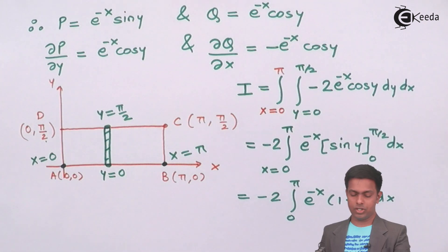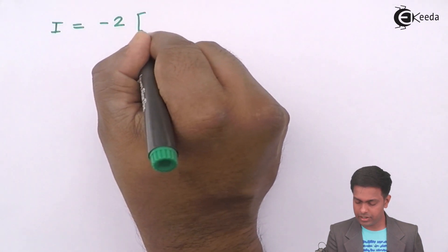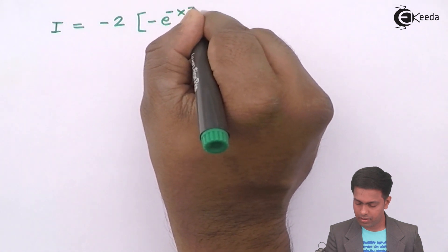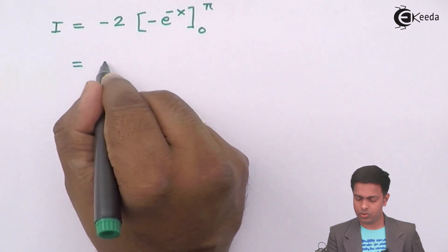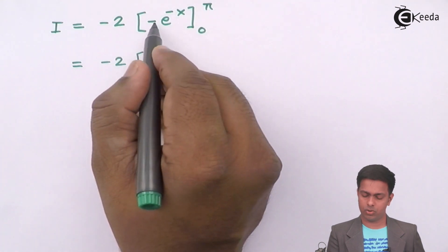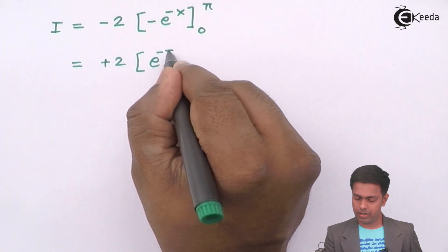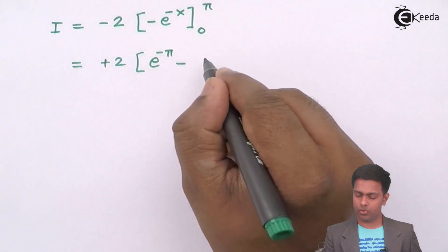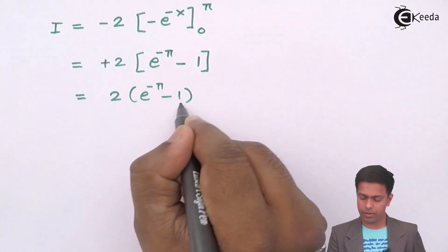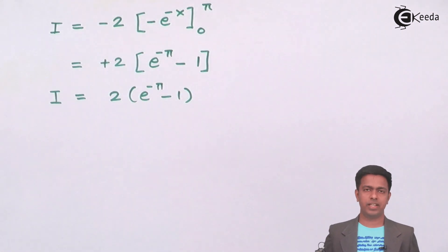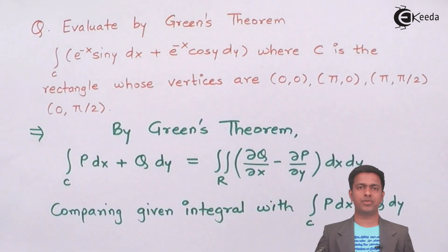The integration of e to the power minus x is negative e to the power minus x. So I equals minus 2 times [negative e to the power minus x] from 0 to π, which gives positive 2 times [e to the power minus π minus e to the power 0]. Since e to the power 0 is 1, our final answer is 2 times (e to the power minus π minus 1). This is the value of the integral evaluated using Green's theorem.